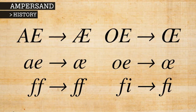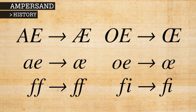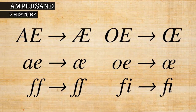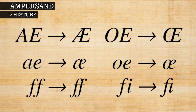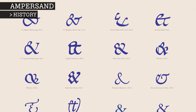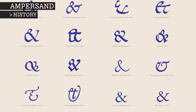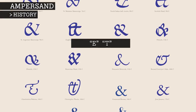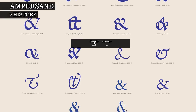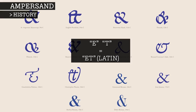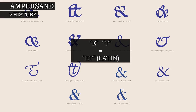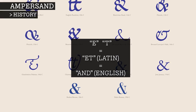Ampersand was created as a character that combined two letters, which is called a ligature. In this case, the ancient Romans were combining the letters E and T, which together spell the Latin word "et," which means "and."